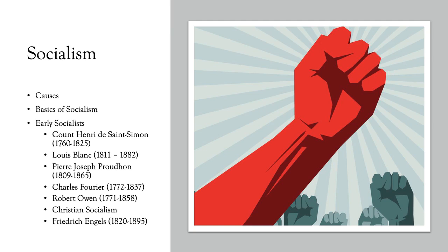Moving on to the basics of socialism: socialism is probably the most consistent ideology between the 19th century and the 21st century — its fundamental goals and values really do not change, whereas liberalism and conservatism do. One fundamental idea of socialism is that the government should intervene to address inequality. There are many ways of doing this, which helps us determine moderate versus more extreme socialism.